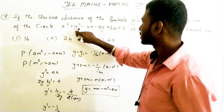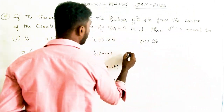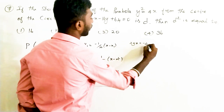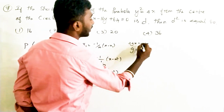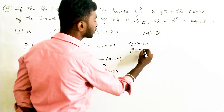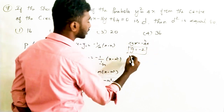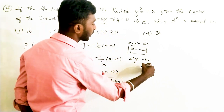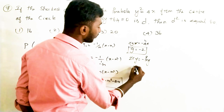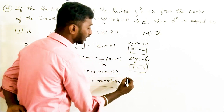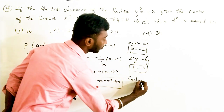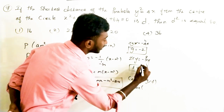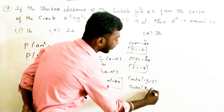The normal passes through the center of the circle. To find the center, we use 2g = -4, so g = -2, and 2f = -16, so f = -8. The center of the circle is (-g, -f) = (2, 8).